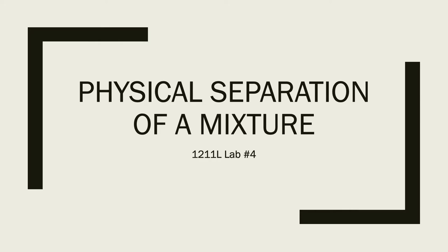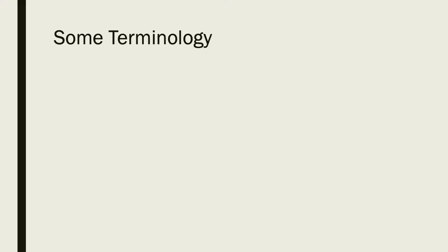Welcome to our second pre-lab video of the semester for the 12-11 lab here in North Georgia. This is going to be our second actual experiment of the semester, but it is lab 4 on our CSE pub, and that's going to be the physical separation of a mixture. For this particular experiment, our main goal is we're going to be providing you a white powder that's a combination of multiple different compounds, and your goal is to actually separate those three compounds. We're going to talk a little bit about some of the terminology involved with these kinds of processes.